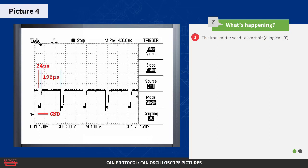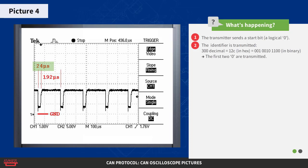First the transmitter sends a start bit. This is a logical zero, i.e., a dominant level. Then the identifier is transmitted. 300 decimal is 12C in hex, or 001 0010 1100 in binary. The first two zeros are transmitted just fine. This explains the 24 microseconds of dominant level as seen in the picture.